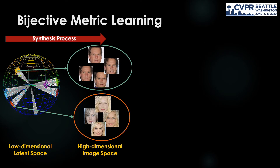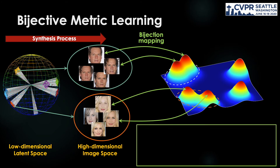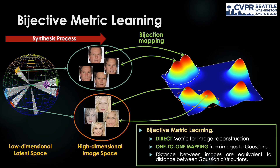We introduce a new form of metric learning, namely bijective metric, which is a direct metric for image reconstruction. It provides a one-to-one mapping from image space to latent space, and the distance between latent variables is equivalent to that of images in image space. As two different images cannot be mapped to the same latent features, the metric learning process is more reliable than other classification-based metrics.